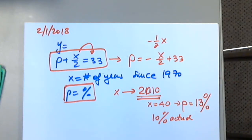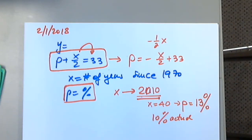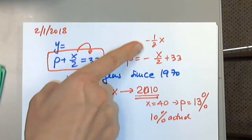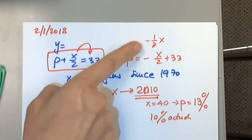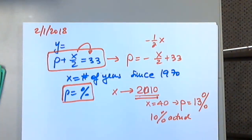This is a very interesting application of a linear equation. Does it have a positive slope or a negative slope? Do you expect the trend to go down or go up? Down — because the slope is the coefficient in front of x, which is negative one-half.